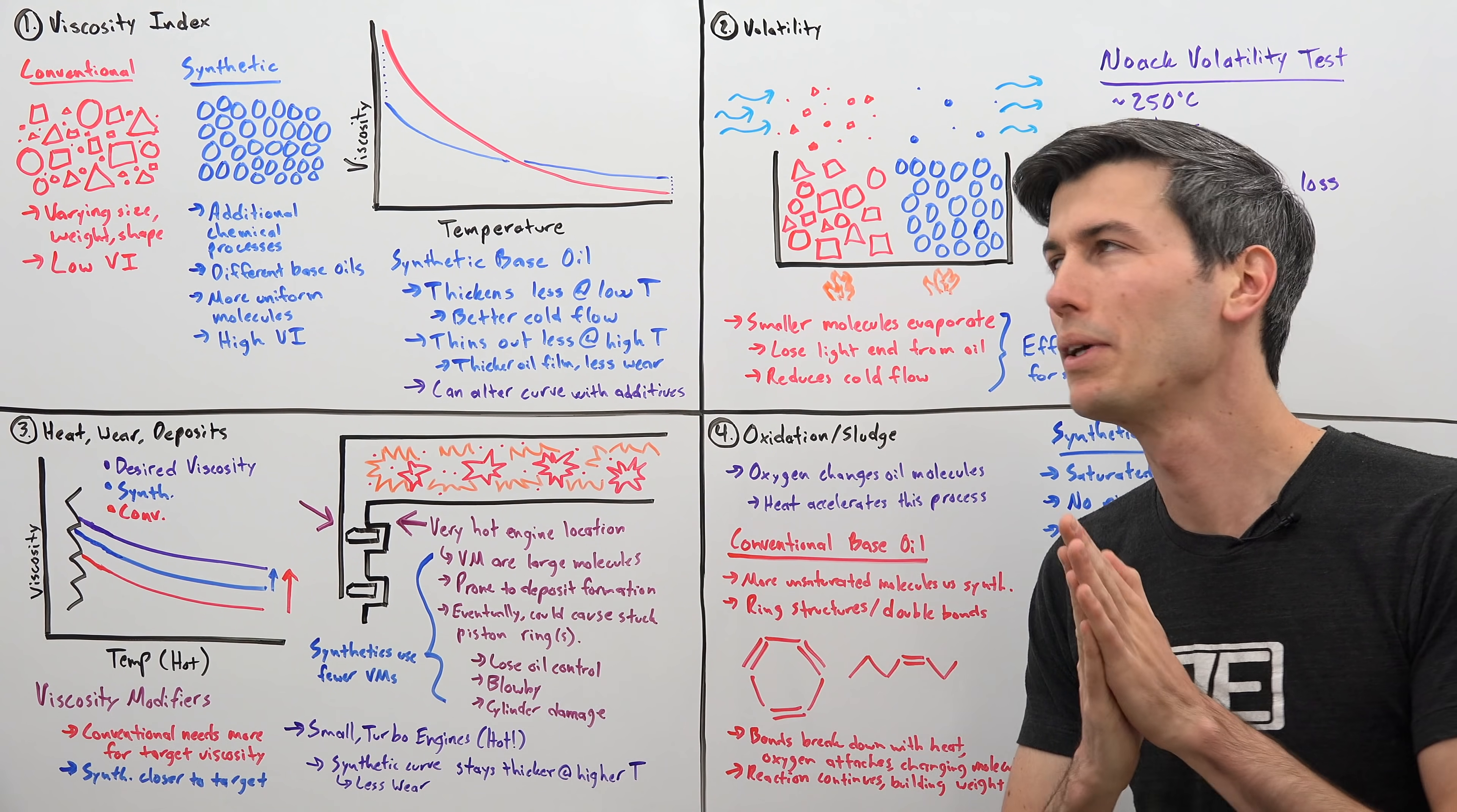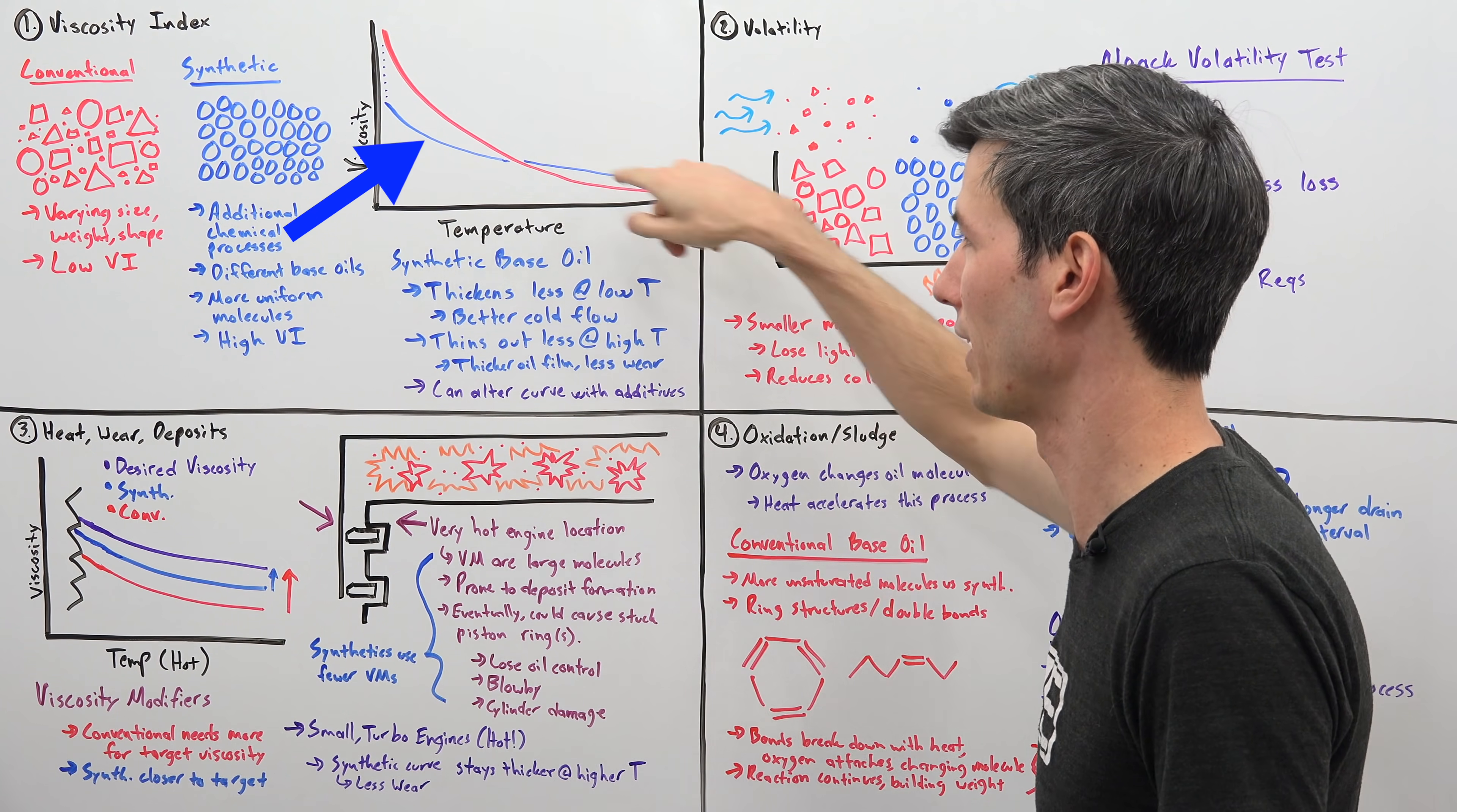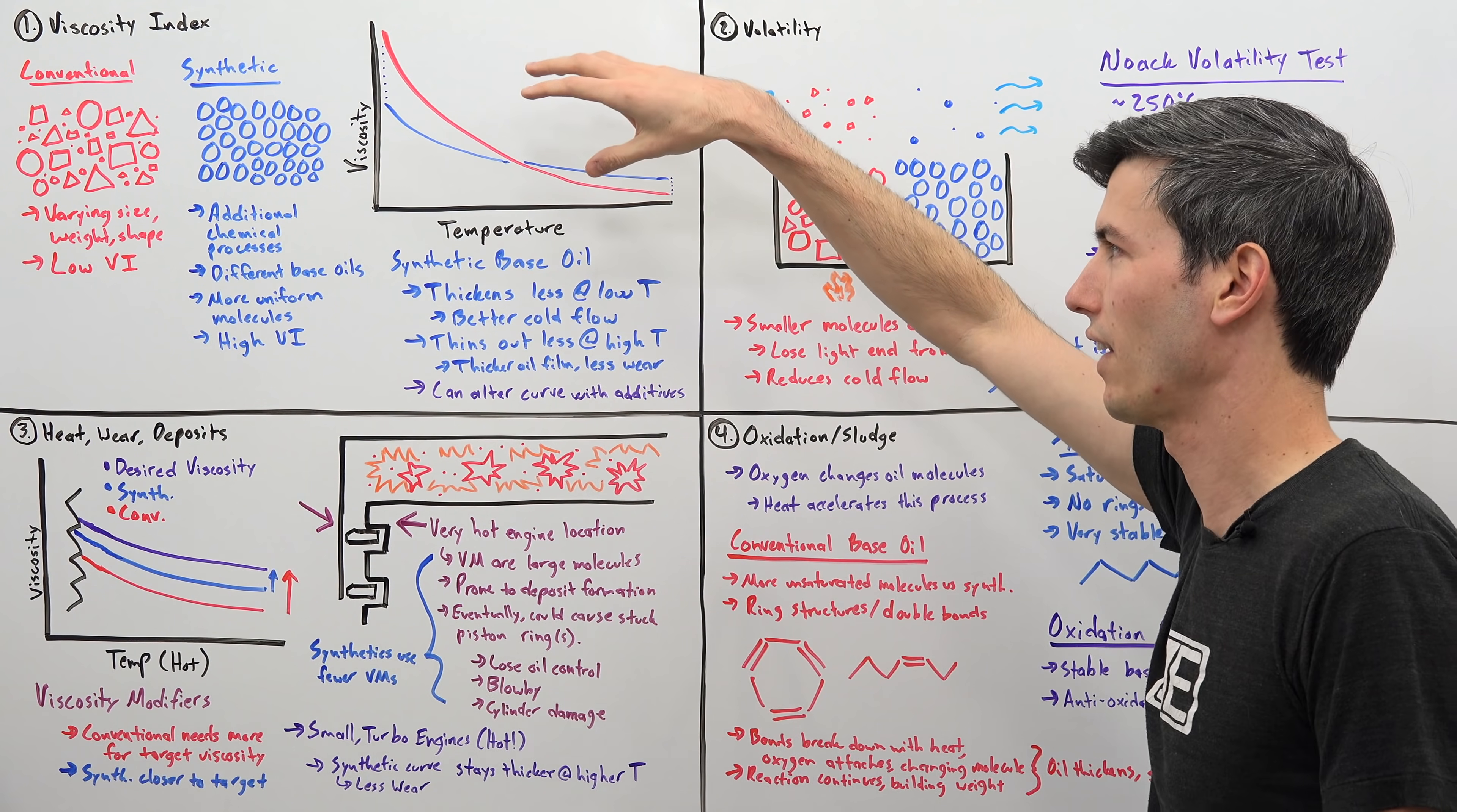The first thing we're going to be looking at is viscosity index, which is simply looking at how viscosity changes with temperature. Something with a low viscosity index changes a lot with temperature versus something with a high viscosity index, which is good, doesn't change as much depending on the temperature. If you look at the base oil, if you look at the molecules that make up the base oil of a conventional versus a synthetic, you'll notice that a conventional oil has a lot of different varying size, shape, weight of the molecules that make it up. And this in turn results in a low viscosity index.